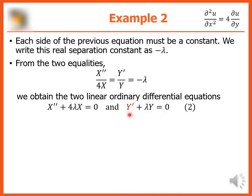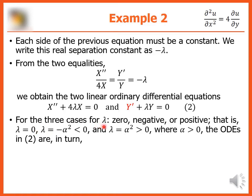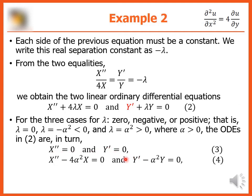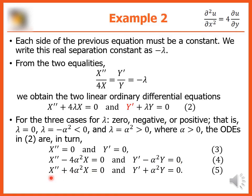Take note of the text in red — this is a correction to your module. For the three cases of lambda: lambda equals zero, lambda equals negative alpha squared, and lambda equals alpha squared, where alpha is greater than zero. The ODEs become: for lambda = 0, X″ = 0 and Y′ = 0; for lambda = −α², X″ − 4α²X = 0 and Y′ − α²Y = 0; for lambda = α², X″ + 4α²X = 0 and Y′ + α²Y = 0.